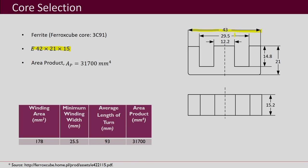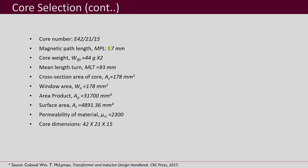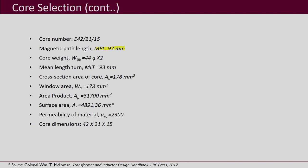These are the dimensions — you can see the width of the central limb and various other dimensions. The winding area in mm², minimum winding width, average length of the turn, and area product are all given for this chosen core. Further parameters include the magnetic path length, core weight, mean length turn, cross-sectional area, window area, area product, surface area, permeability of the material, and core dimensions.